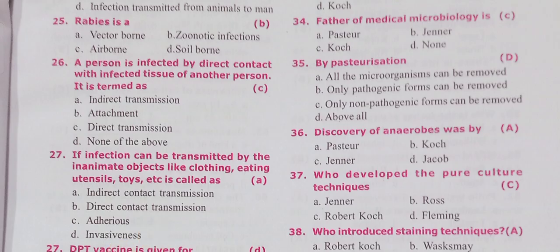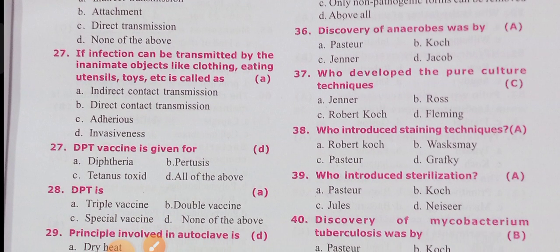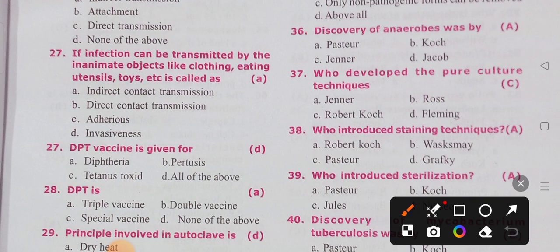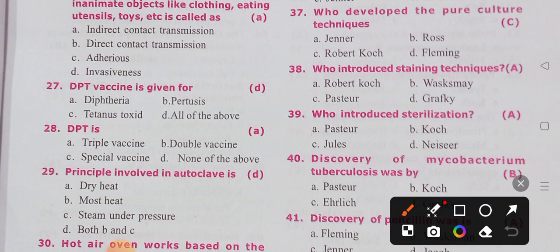A person infected by direct contact with infected tissue of another person is termed direct transmission. If infection is transmitted by inanimate objects like clothing, eating utensils, or toys, it is called indirect contact transmission.